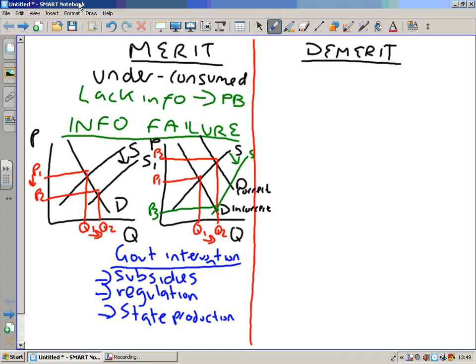Now let's move on to demerit goods. These are very similar to negative externalities in the sense that they are over-consumed. The difference between these and negative externalities is the reason why they are over-consumed. Negative externalities are over-consumed because people don't consider the external costs in the free market. Demerit goods are over-consumed because people lack information about private costs.